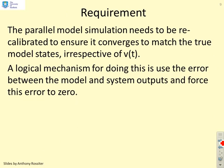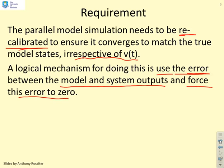What do we need to do? The parallel model simulation needs to be recalibrated to ensure it converges to match the true model states irrespective of V. A logical mechanism for doing this is to use the error between the model and the system output. We're going to recalibrate by saying my model and my process have got different outputs. How can I force this error to go to zero?